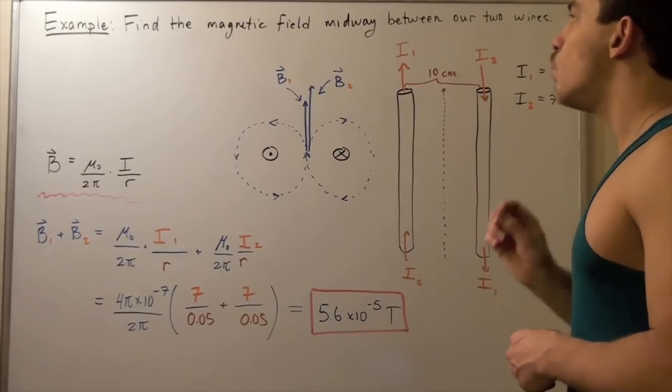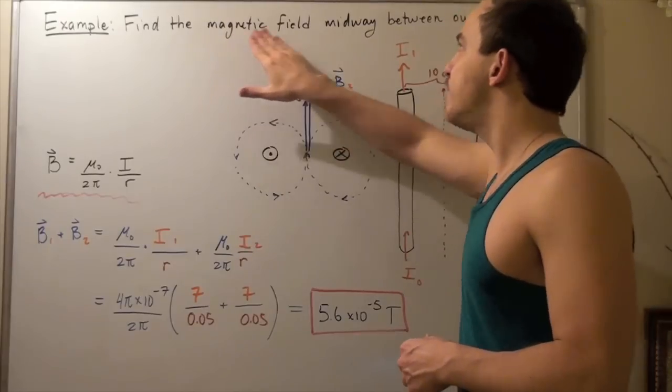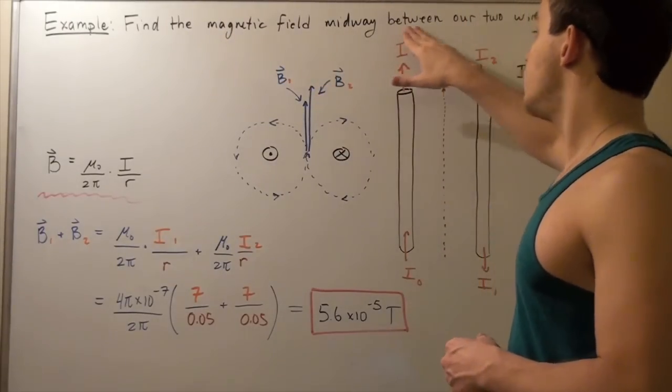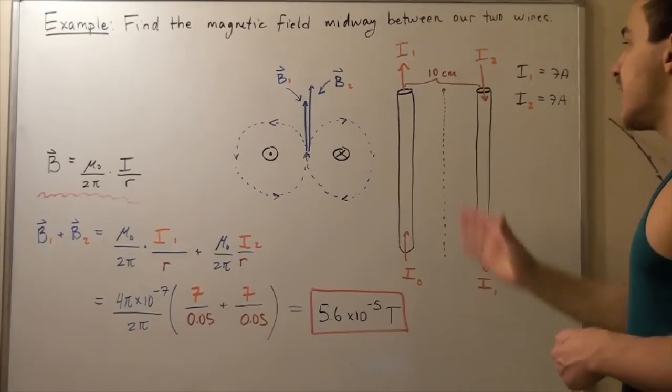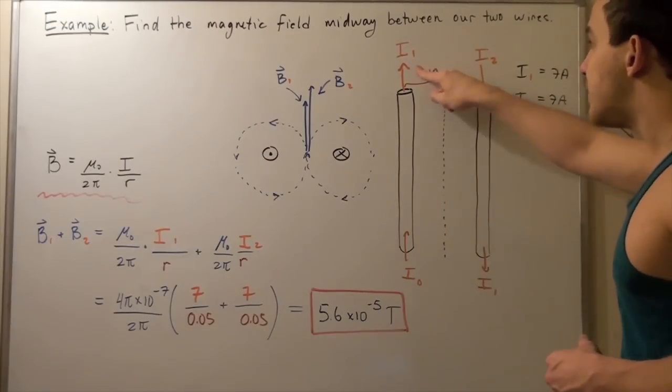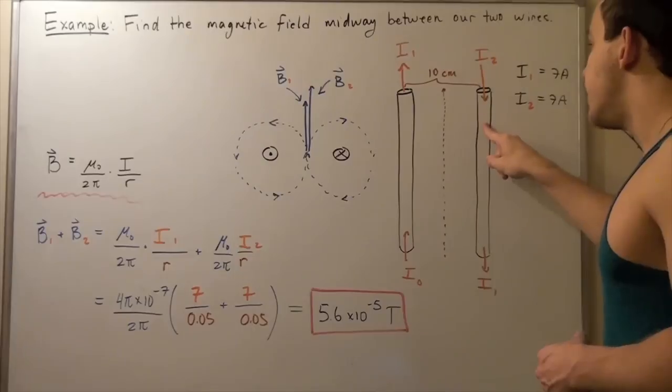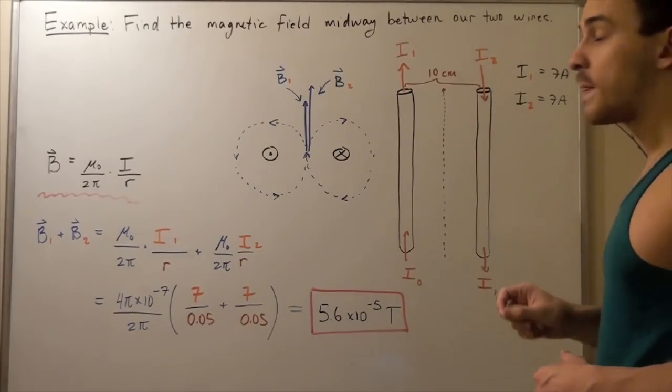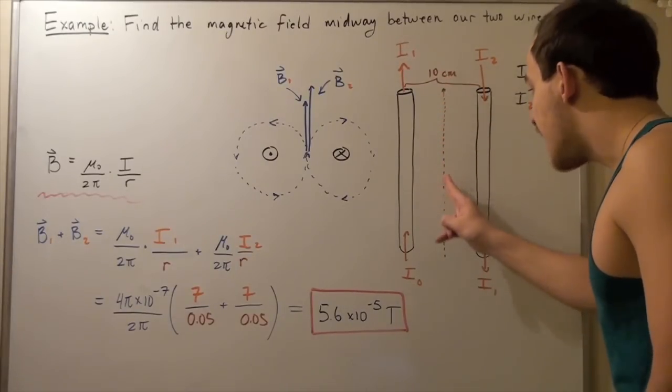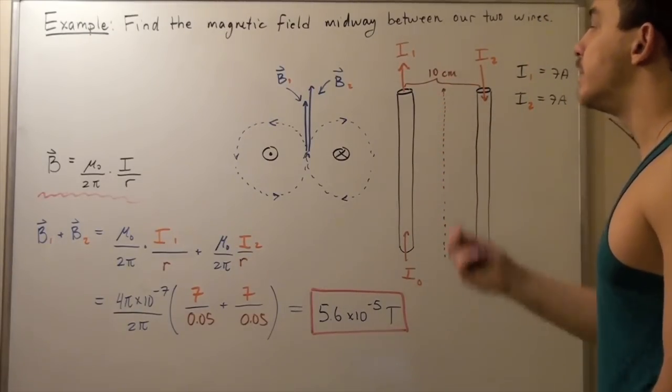And suppose I want to find my magnetic field midway between my two wires. Midway simply means smack in the middle. So five centimeters from wire one and five centimeters from wire two. So along this entire line, what is my magnetic field?